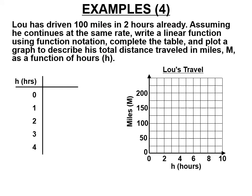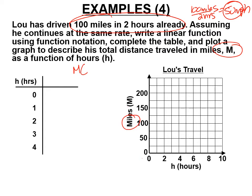Lou has driven 100 miles in two hours already. Going 100 miles in two hours means he was going 50 miles per hour — that's the slope of our graph. Assuming he continues at the same rate, write a linear function: miles as a function of hours. The rate is 50 miles per hour, and the y-intercept is 100 because he already went 100 miles.